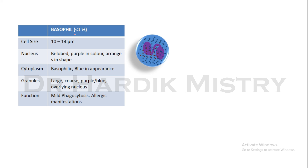Now the basophil. The concentration of basophil is less than 1%, very low, and they are not found on a routine peripheral blood smear. Cell size 10 to 14 micrometers. Nucleus bilobed, purple in color, arranged in S shape. Cytoplasm basophilic or blue in appearance. Granules large, coarse, purple or blue in color, overlying the nucleus. Function: mild phagocytosis and allergic manifestations. This cell is the basophil — bilobed with lobes arranged in S shape, and granules are purple or blue covering the nucleus. Unfortunately, I have not been able to find a real photograph of the basophil.